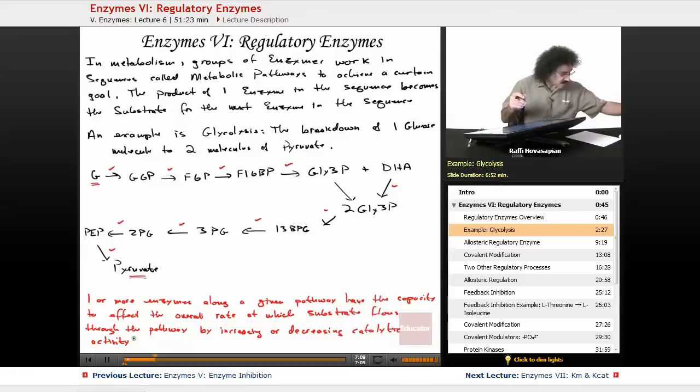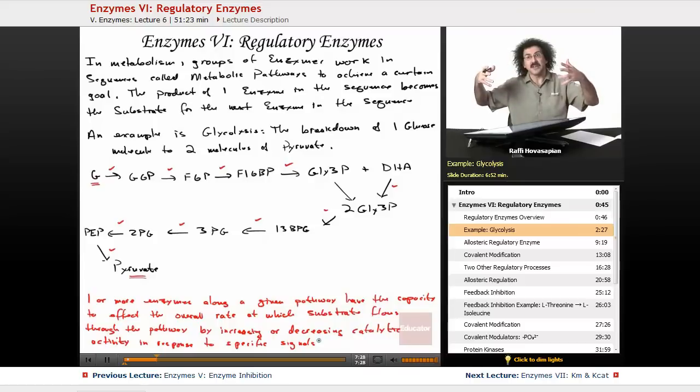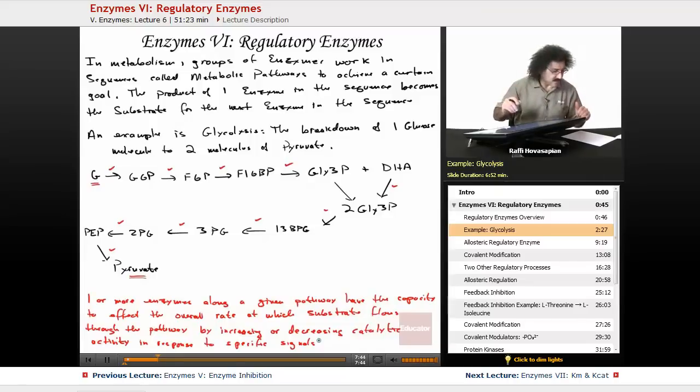Catalytic activity in response to specific signals. So, for example, if there's too much of a certain molecule in the body, and the body needs to sort of cut that back so that that excess is actually used up, a regulatory enzyme will shut down a particular pathway that's producing that molecule temporarily until that concentration of molecule diminishes, and then it'll open up the floodgates again to allow more to produce. That's all that's going on here. Specific signals.